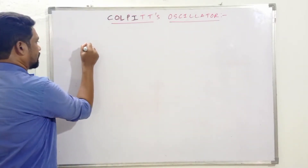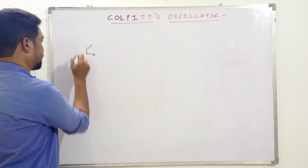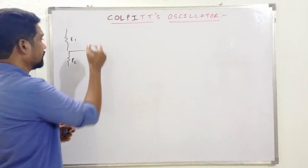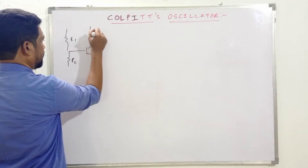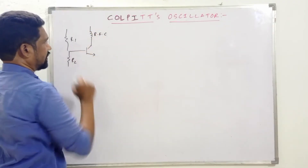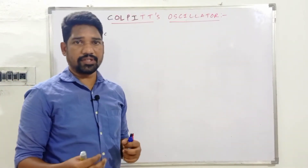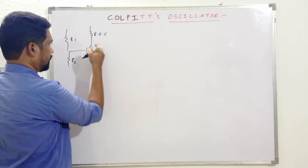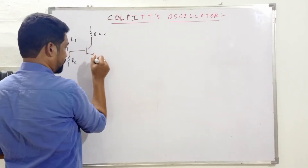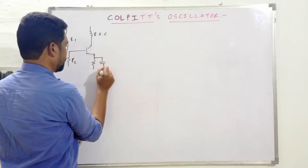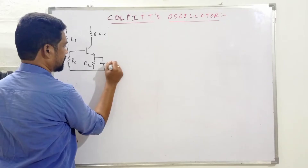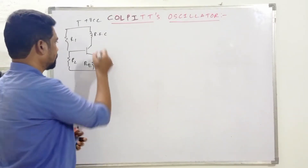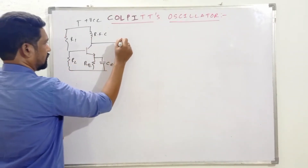Colpitts and Hartley are classifications of LC oscillators. In this circuit, R1 provides biasing and the required operating point. Instead of a simple RC resistor, we use an RFC — radio frequency coil — because in communication we need maximum transfer of power to the load. The RFC inductor substitutes the resistance. We also have RE, bypass capacitor CE, and supply VCC — these are common to all oscillator circuits.